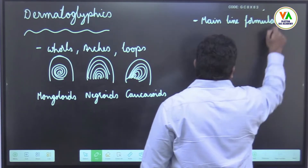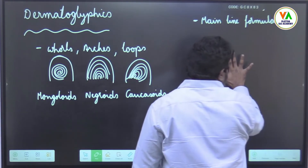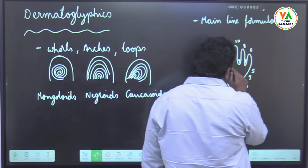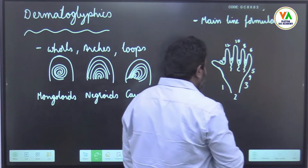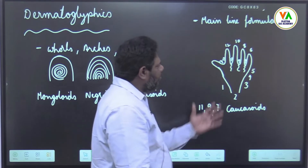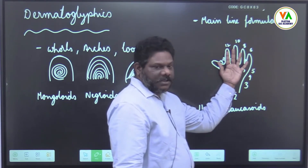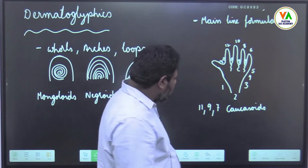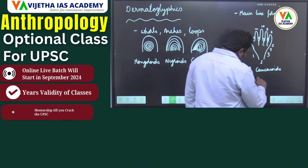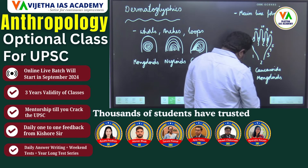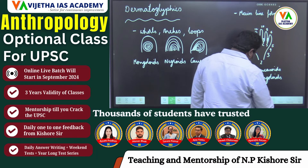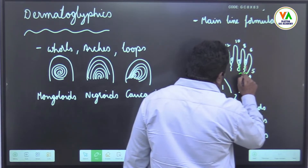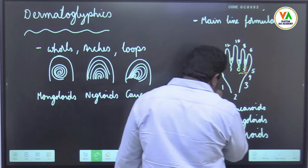Next one is mainline formula. If you draw your palm in this manner, a 1197 pattern is present in Caucasoids. 975 in Mongoloids, and 755 pattern in the case of Negroids.